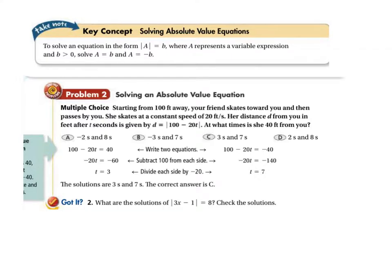A little bit of story problem fun here. Starting from 100 feet away, your friend skates towards you and then passes by you. She skates at a constant speed of 20 feet per second. Her distance d from you in feet after t seconds is given by d equals the absolute value of 100 minus 20t. That's per every second, right?